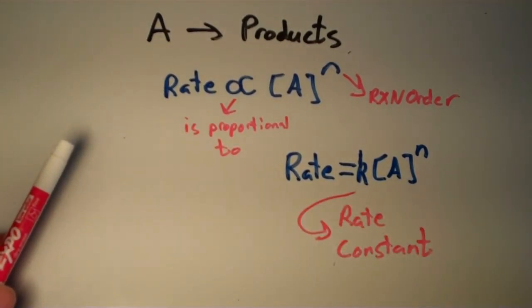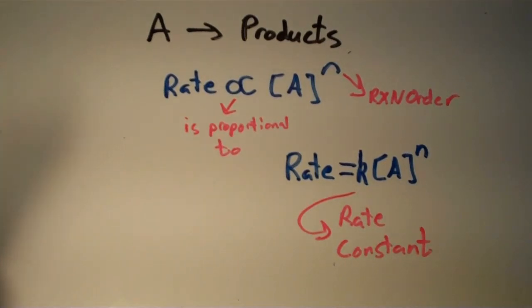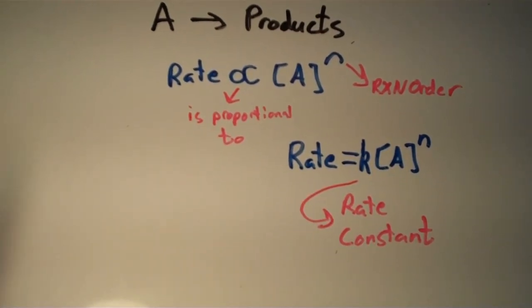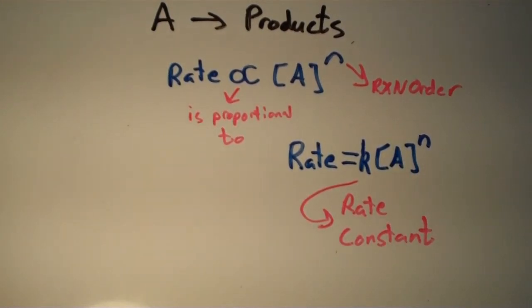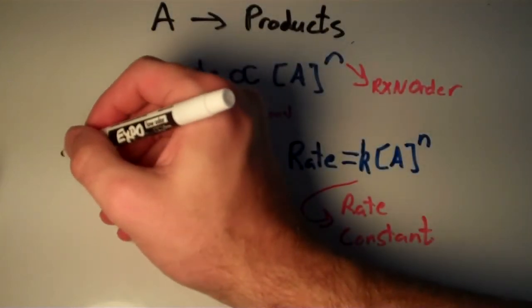So here you have it: rate equals K times the concentration of A to the nth power. Now let's explore some of the values of n that we can have.